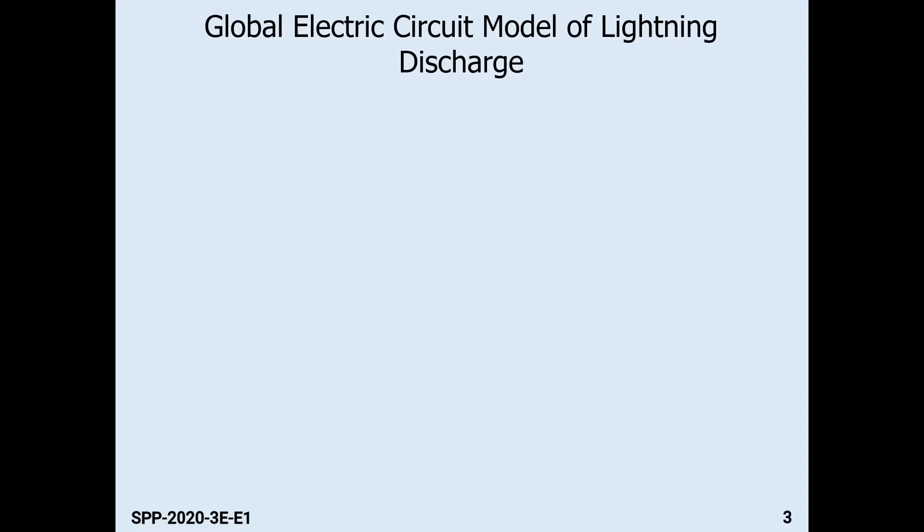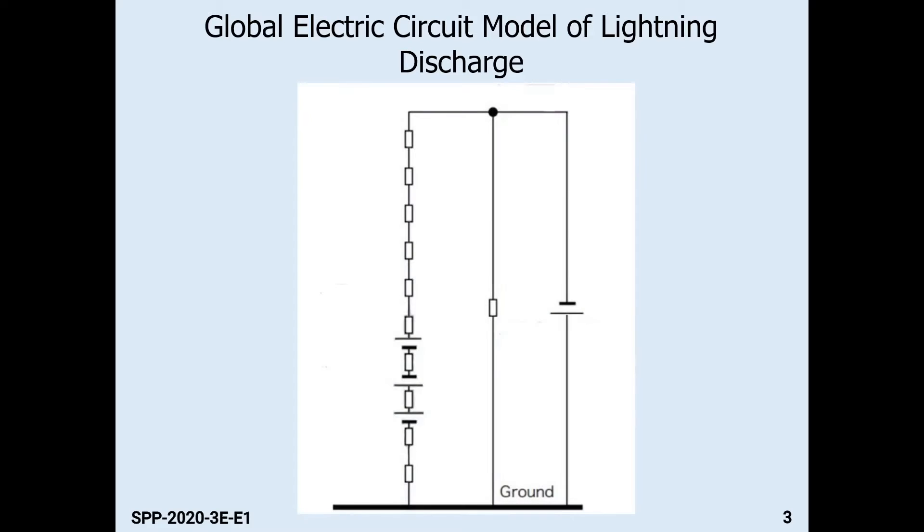We simulate the system numerically using an electric circuit model consisting of a system of resistors and batteries to represent the air column, thundercloud and electric charges. The distribution of charges are represented by three batteries with fixed voltages and the air column by resistors. The resistance of each resistor are calculated from the conductivity model of the atmosphere. In our model, we start with 10 resistors to represent a 1D air column of 2 kilometers.